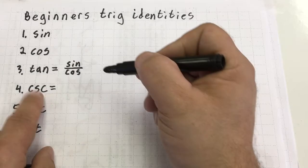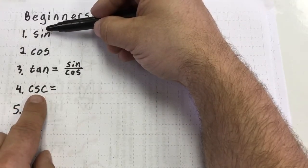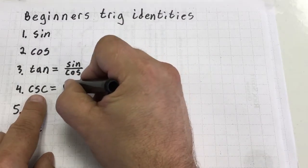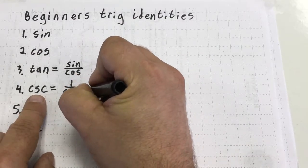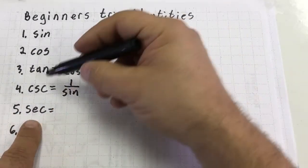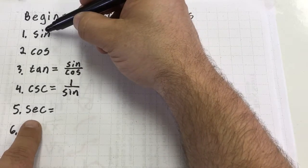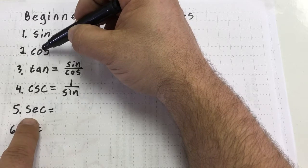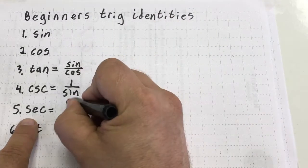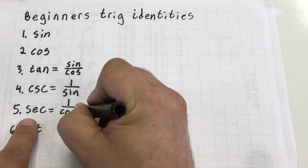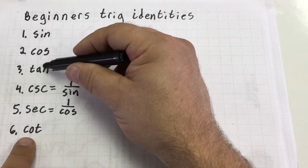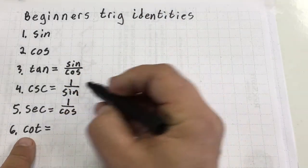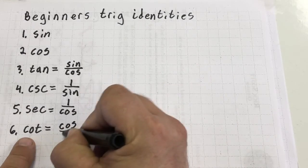Because I have cosecant next — the reason I chose that — cosecant is equal to one over sine. Now, secant: if cosecant is equal to one over sine, then secant is going to be equal to one over cosine. And that's why I chose that order. Since tangent is equal to sine over cosine, cotangent can be represented as cosine over sine.